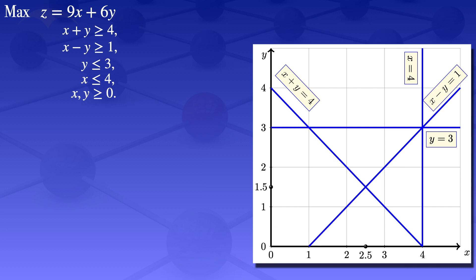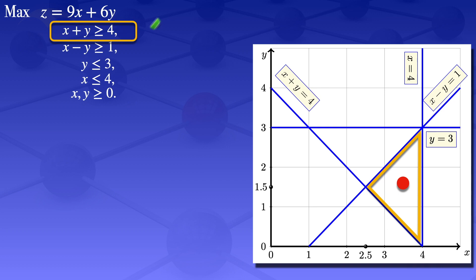I'll now check the next region. I'll take the point (3.5, 1.5) in that shaded region and check if it satisfies all the constraints. Starting with the first one: x + y ≥ 4. With x = 3.5 and y = 1.5, we get 3.5 + 1.5 = 5, which is ≥ 4. So this constraint is satisfied.